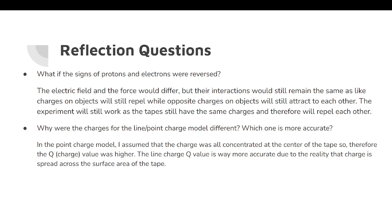Why were the charges for the point and line charge models different, and which was more accurate? The point charge model assumed that all of the charge was concentrated at the center of the tape, so therefore the Q value was higher. In the line charge, the Q value was way more accurate, due to the fact that the charge is actually spread across the surface area of the tape.